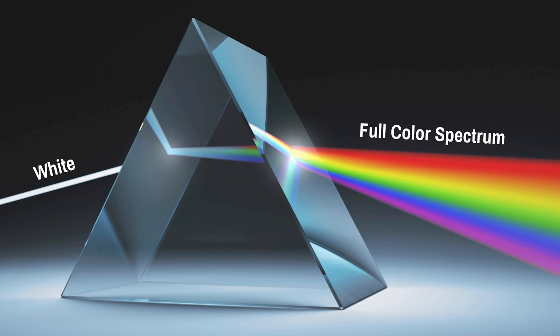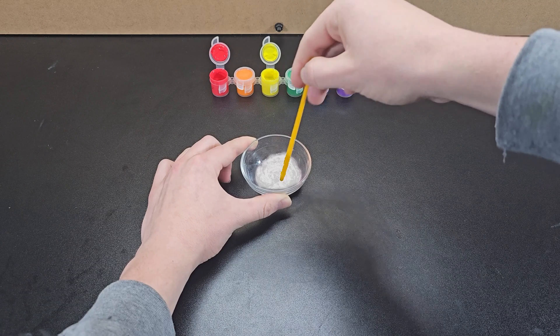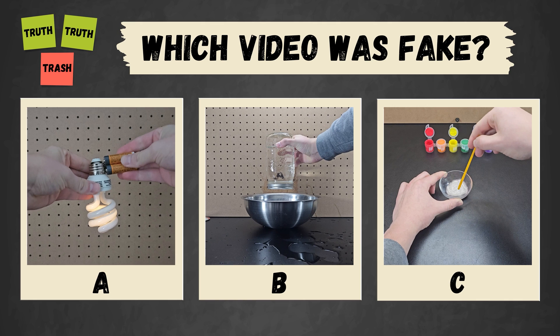The color white is a combination of all wavelengths of light, which is why adding three primary colors together and mixing them results in white paint. You've seen all three videos now, pause to vote in the comments which one you thought was fake.